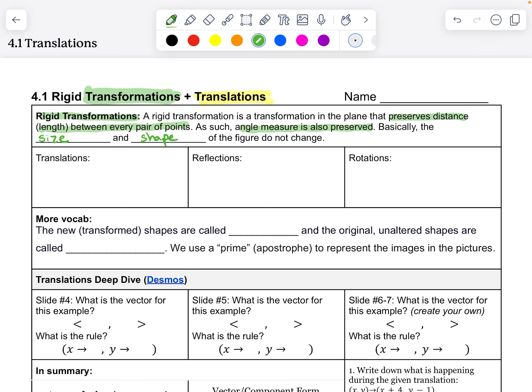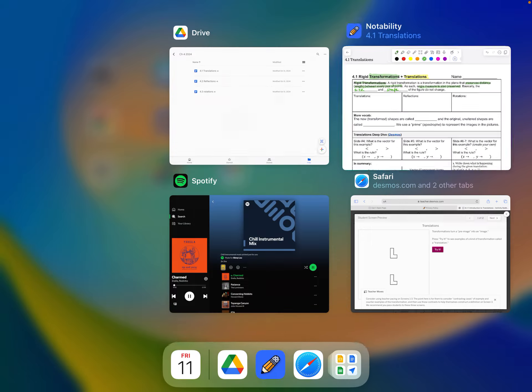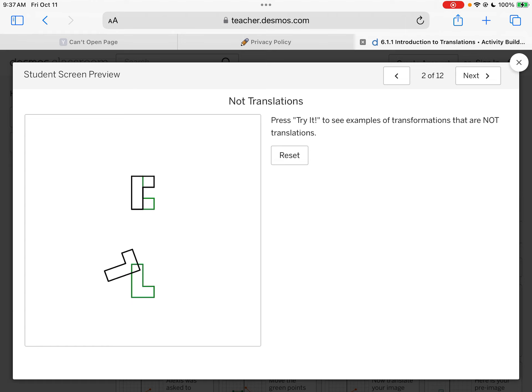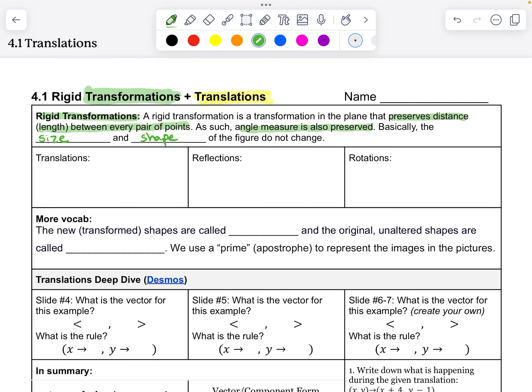I have a card sort that you do in class. Let me show you a couple of them on Desmos. This is a transformation. That one is a translation. These are not translations. That one is going to be a reflection, and the bottom one is a rotation. So a translation, I call it a slide. A reflection is a mirror across a line, and a rotation is a spin.